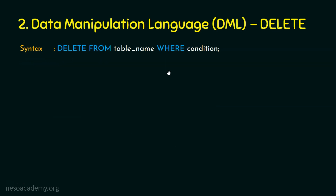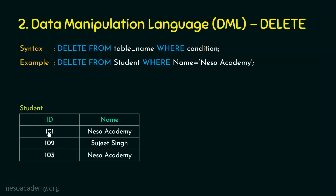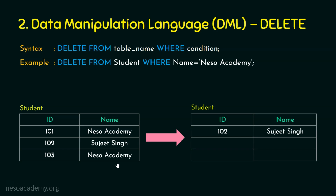Let's see another example: DELETE FROM student WHERE name = 'Neso Academy'. Suppose we have a table where id 101 has the name Neso Academy, and id 103 also has Neso Academy. When we execute this query, two rows will be deleted because two rows are matching the condition. We'll be left with only one row — 102, Sujit Singh — in the final table.